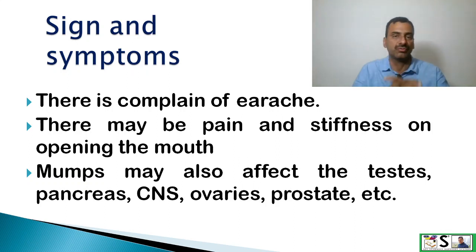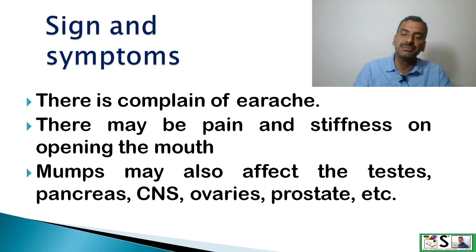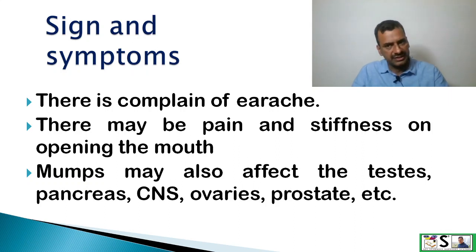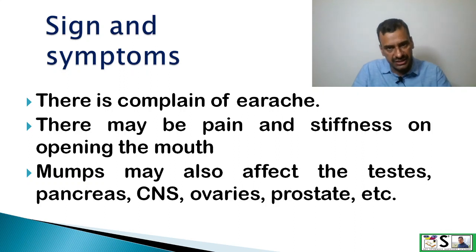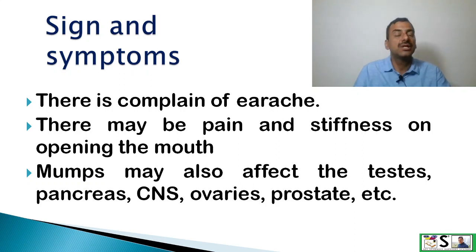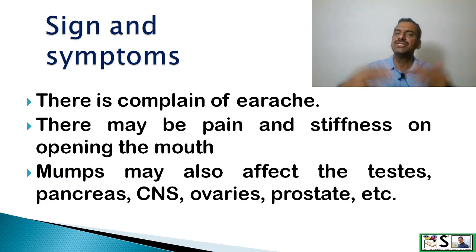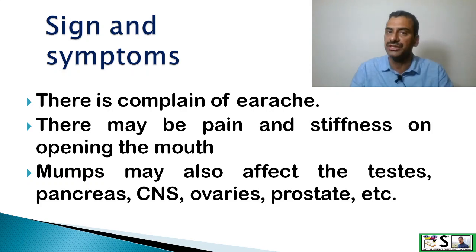Mumps may also affect the testes, pancreas, central nervous system, ovaries, prostate, and so on. It means it can affect multiple organs.